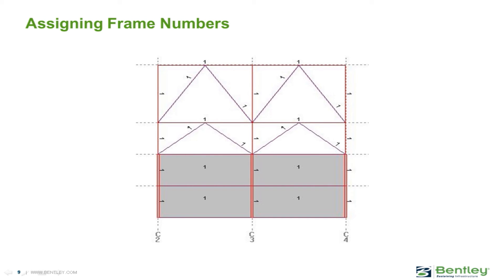The last property we're going to be assigning to our lateral frame members are frame numbers. All of the previous properties assigned through this video have affected the performance of your lateral force-resisting system, such as your member end fixity, your member sizes, and wall openings. Lateral frame numbers, however, don't exactly affect the behavior of your lateral system. In fact, the analysis performed in RAM Frame will be independent of the assigned frame number. Lateral frame numbers can be assigned for output purposes, and it may be convenient to assign different frame numbers to portions of the lateral framing system, as the output results may be grouped based on frame number.